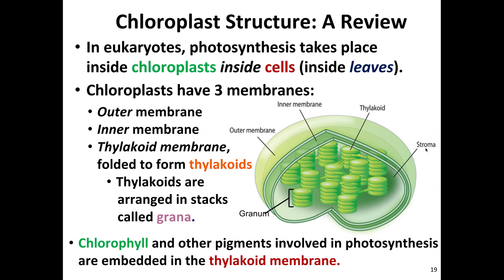In addition to the grana, there's the stroma — the fluid-filled space within the chloroplast, like the cytoplasm inside one individual chloroplast. It's made up of fluid and water, and it's the stuff that surrounds the grana within the chloroplast. The membranes that make up the chloroplast are made of a phospholipid bilayer and are embedded with different proteins.